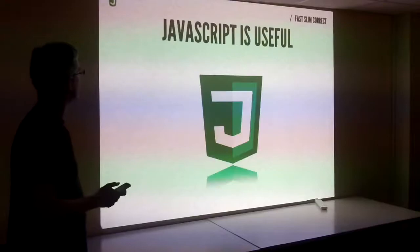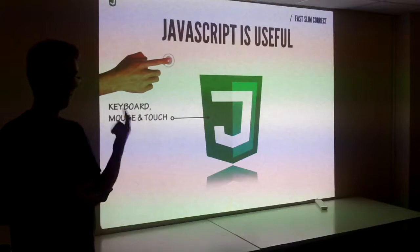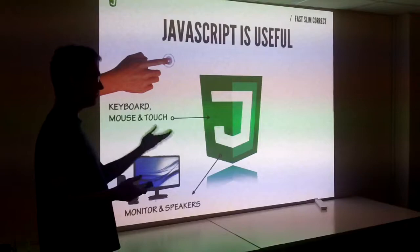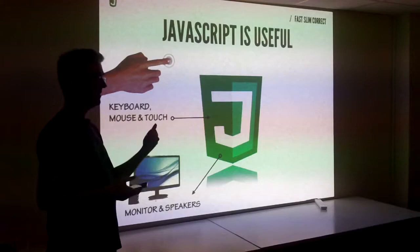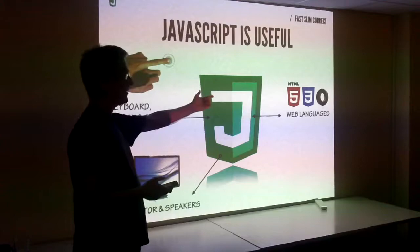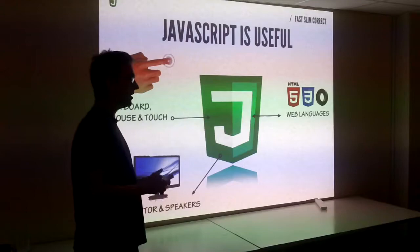Why do people use JavaScript? Firstly, it's really useful — it can get user input from the keyboard, the mouse, touch events. You can also output stuff: throw things to the monitor, to the speakers using Web Audio. JavaScript does clever things inside and shoots stuff out to the monitor using HTML and CSS. It speaks these languages natively — JavaScript can write HTML and CSS. But you can't go the other way: HTML cannot write JavaScript. That's what makes it really versatile.